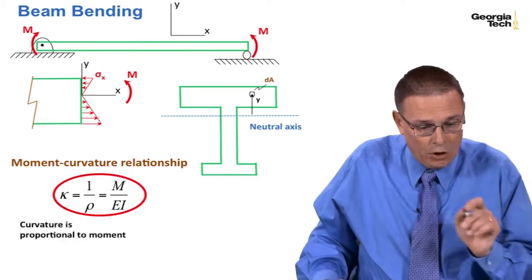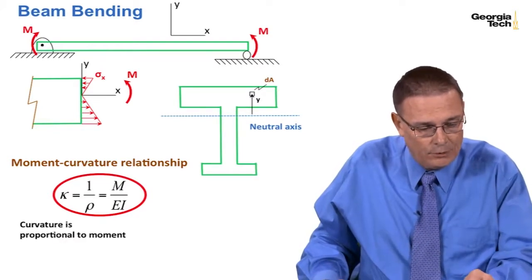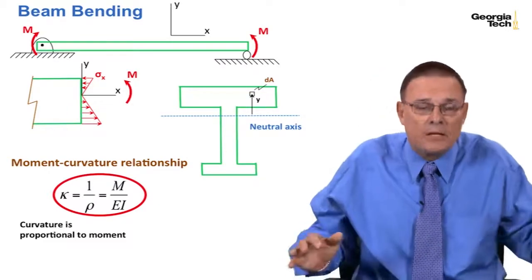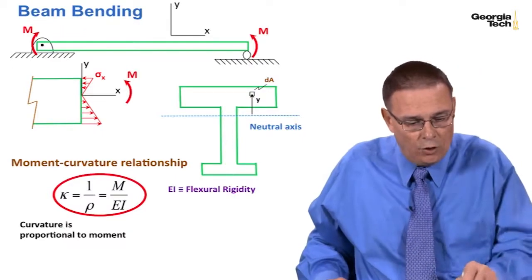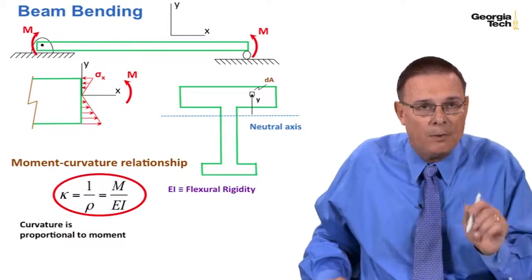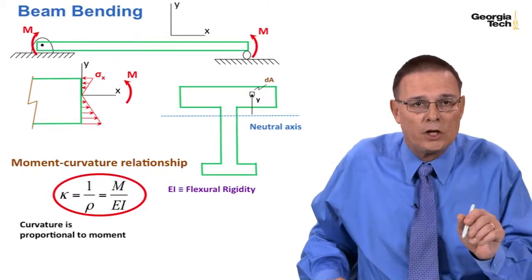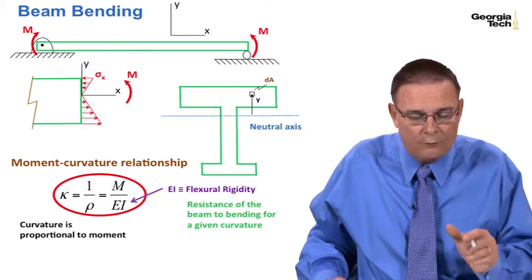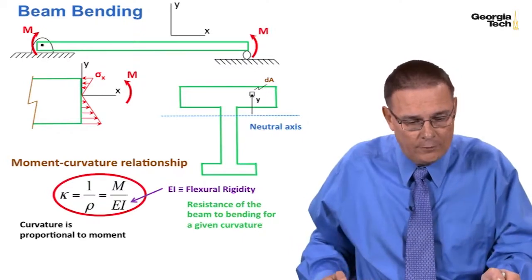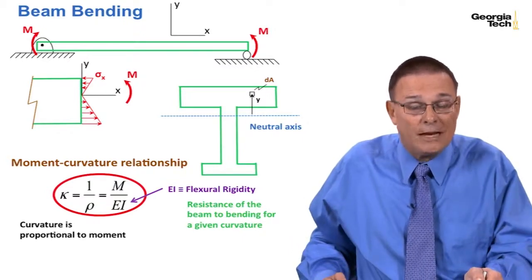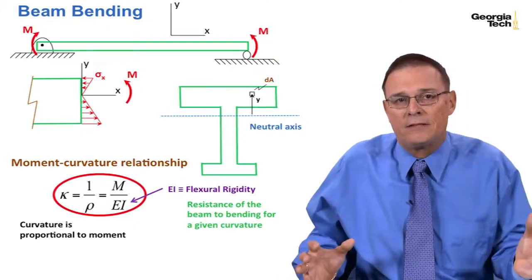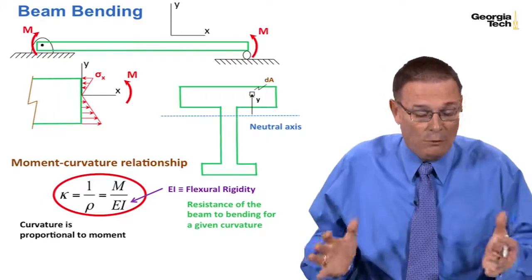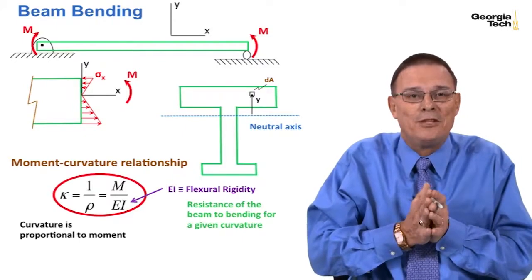We notice that curvature kappa is proportional to the moment — the greater the moment, the more curvature you get. That makes physical sense. We also call what's in the denominator, E times I — Young's modulus times the area moment of inertia — the flexural rigidity. That is the resistance of the beam to bending for a given curvature. For a given curvature, higher flexural rigidity means it takes more moment to achieve that curvature. So now we've got this important moment-curvature relationship and we'll be able to continue on.